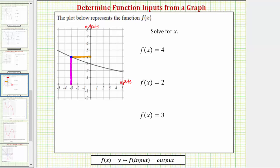Notice how the coordinates of this point, or the ordered pair for this point, would be negative three, four. So when the input is negative three, the output or function value is four, so if f of x equals four, we now know x equals negative three.